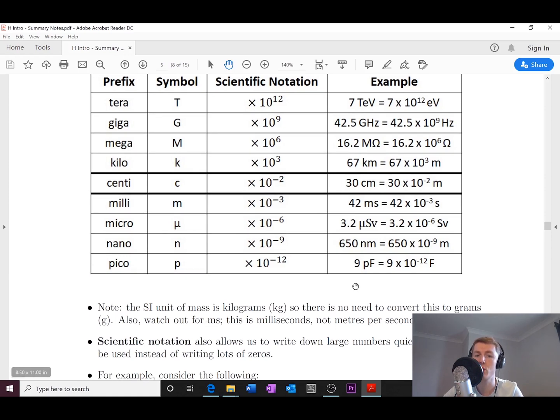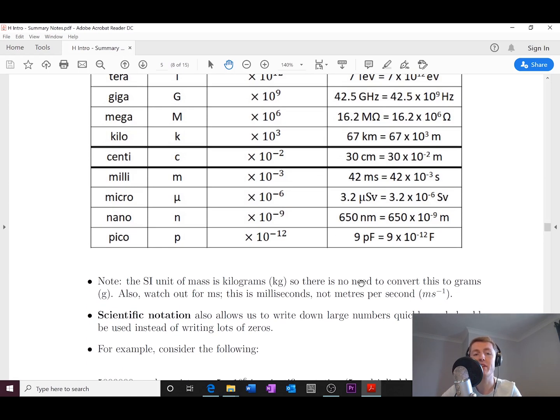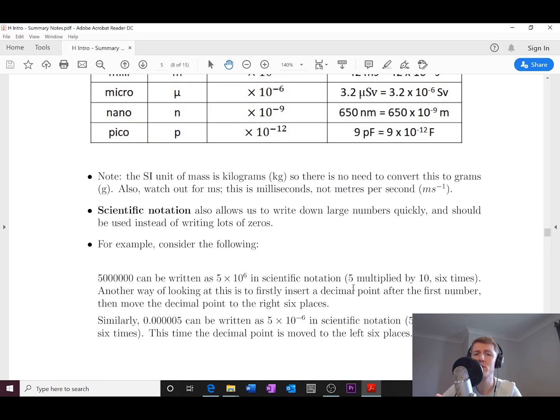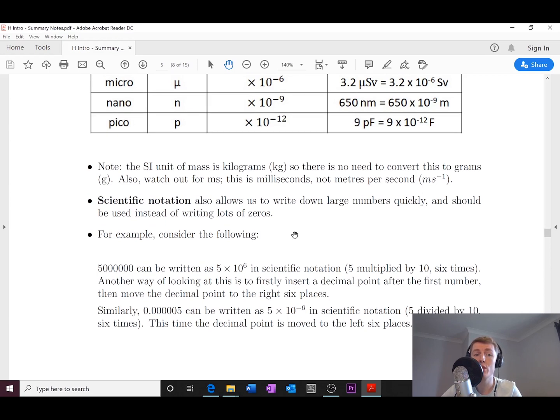And just lastly, a quick word on scientific notation. So just to give you a reminder, remember we use scientific notation as a quick way of writing down lots of numbers. You've got this example here: 5 million can be written as 5 times 10 to the 6 in scientific notation.